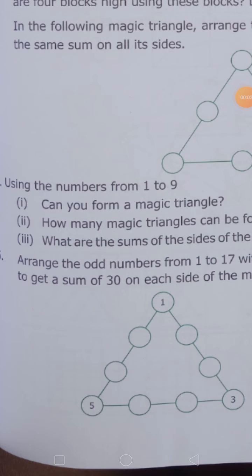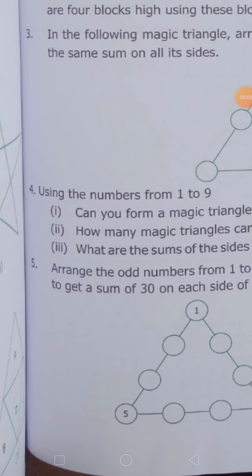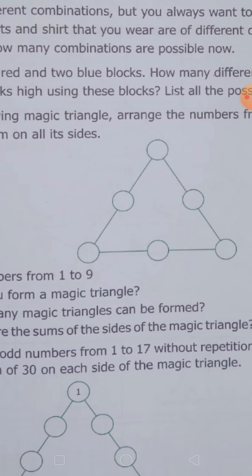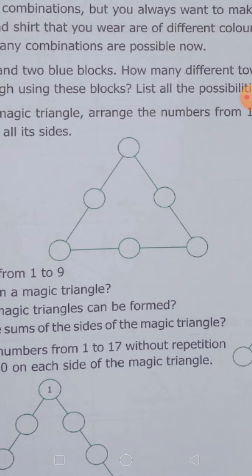Today we are going to solve the 4th and 6th systems. Using the numbers from 1 to 9, can you form a magic triangle? Before starting this problem, you have to know what a magic triangle is. Magic triangle means adding the sides — all the sides have the same answer.